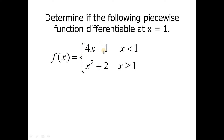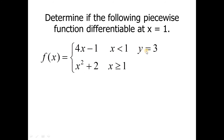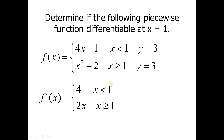Now I want to determine whether this function is differentiable at x equals 1. Plugging in 1 to the top piece: 4 times 1 minus 1 gives a y value of 3. Plugging in 1 to the bottom piece: 1 squared plus 2 also gives a y value of 3. Both pieces give y equals 3, so this function passes the first test — it is continuous at x equals 1.